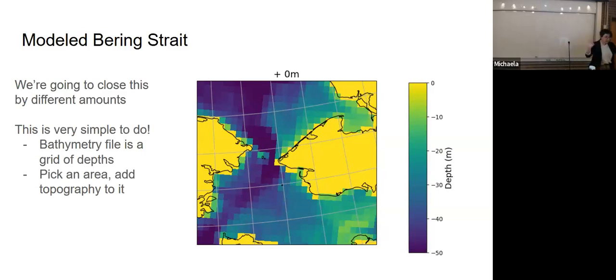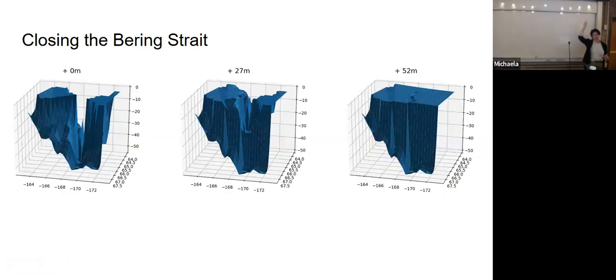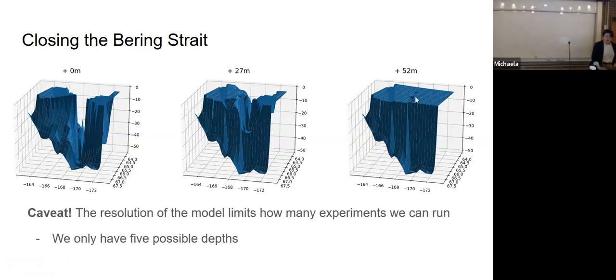Editing the topography of this model is as simple as opening a file and adding however much topography you want to add. This is what that looks like. These are just three experiments. This is all the way open. This is all the way closed. And then this is halfway. Here, 52 meters deep. Here, zero meters deep. Here, it's about 20 meters deep. If it helps to look at it in three dimensions, that's what it looks like. This is our fully open strait. You can see plenty of space for water to get through, less space, no space. It's just land. A caveat is that we have 17 meters horizontal resolution, but we have only 10 meters of vertical resolution.